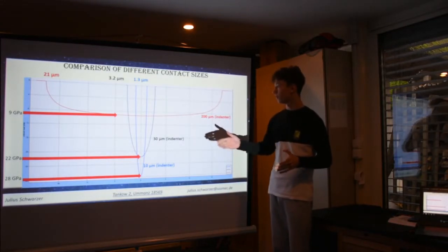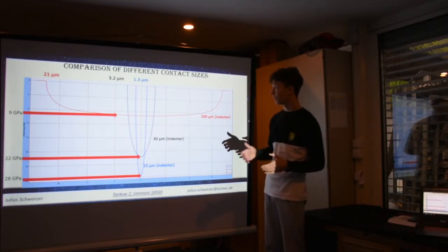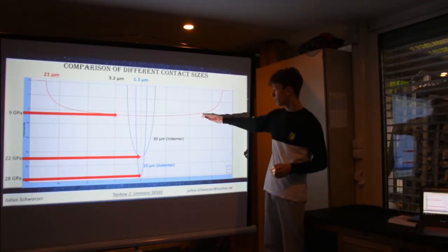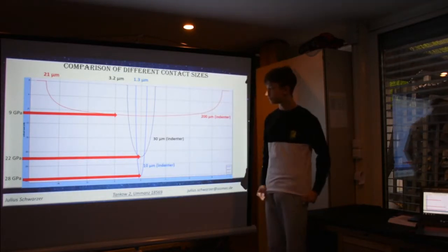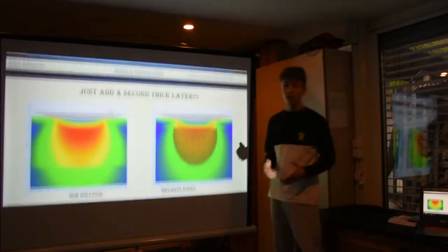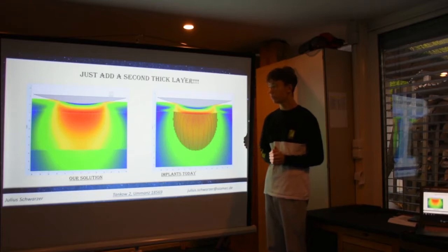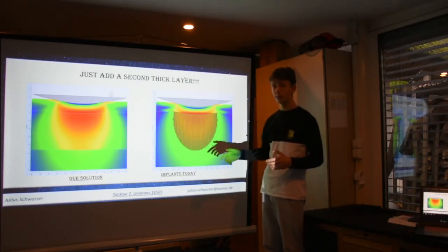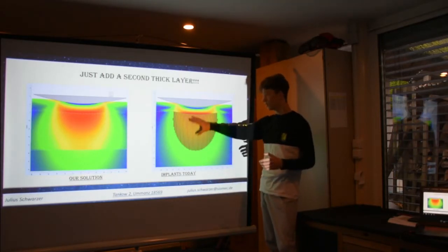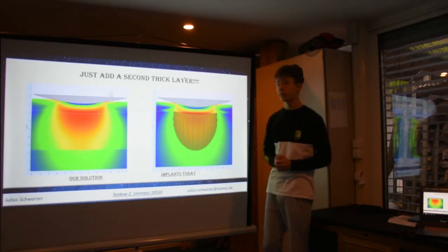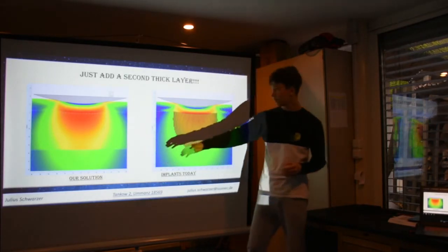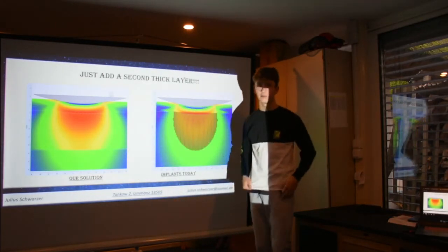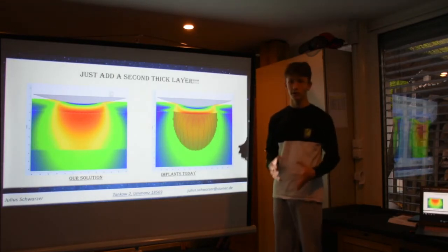Here I have shown you a little graph where you can see a comparison of all the different examples, from the worst case scenario to the best case scenario. Because of that, we found a solution, and our solution was pretty simple — just add a second layer. As you can see here, we have two times the worst case scenario: one with today's implants showing huge damage marked with black dots, and here we have our solution. You can see the substrate, the second layer, the first layer, and no damage — no black dots.